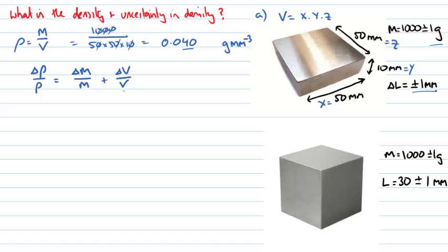However, we do know how the volume can relate to the lengths that we're given, x, y, and z. So we know that the volume here is equal to x times y times z. So since we've got multiplication, once again we can use the relative uncertainty delta v over v must be given by the sum of the relative uncertainties delta x over x plus delta y over y plus delta z over z.